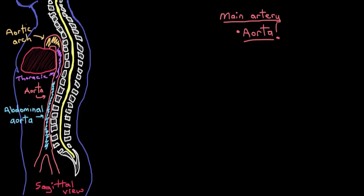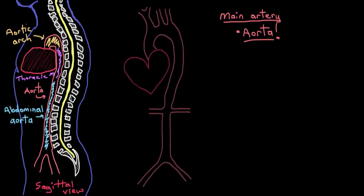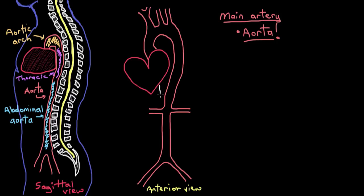Now we've looked at the aorta from a side view, but to get an even better appreciation of what it looks like, let's look at it from a front view, or an anterior view. The aorta sits about midline in our bodies, runs down behind the heart, and sort of follows the spinal column — our vertebral bodies. The aorta is really the main artery in our bodies because it's the big highway that blood takes to get to every other part of the body.